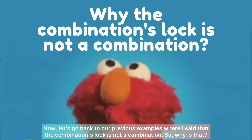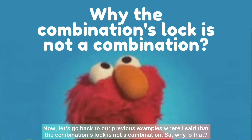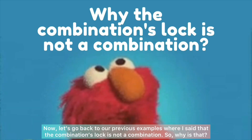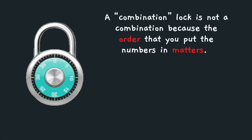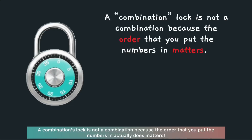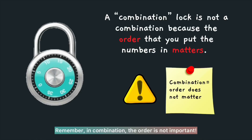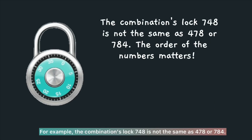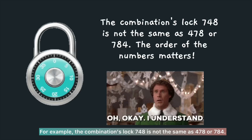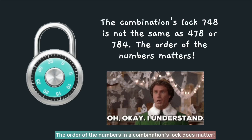Now let's go back to our previous example where I said that the combination lock is not a combination. A combination lock is not a combination because the order that you put the numbers in actually does matter. Remember, in combination the order is not important. For example, the combination lock 748 is not the same as 478 or 784. The order of the numbers in a combination lock does matter.